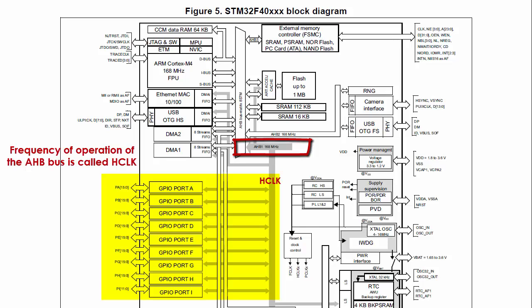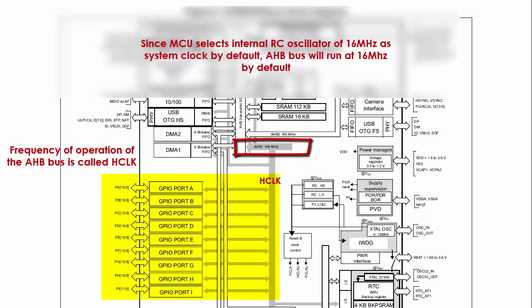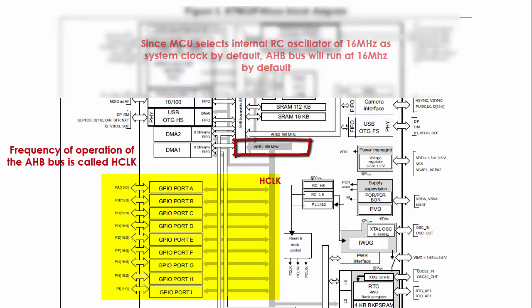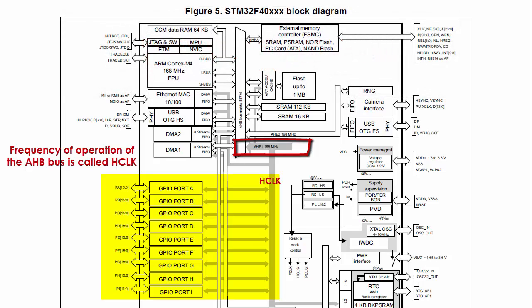So the peripheral clock of the GPIO port is derived from the AHB1 bus clock. In our case, AHB1 will run at 16 MHz because we are using the internal RC oscillator of 16 MHz as the system clock. By default, the peripheral clock of almost all peripherals are disabled to save power.